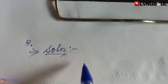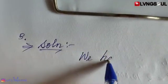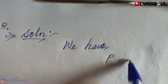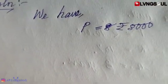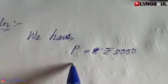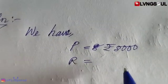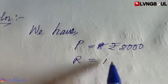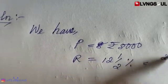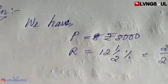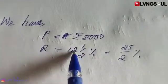Question number 2: Principle is equal to rupees 8,000. Rate is 12.5%, which is 12 and a half percent, or 25 by 2 percent. Time is 2 years.